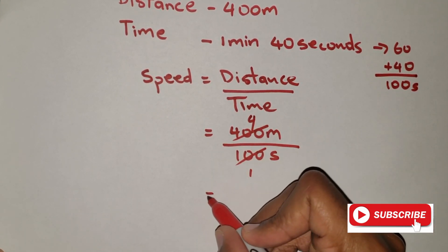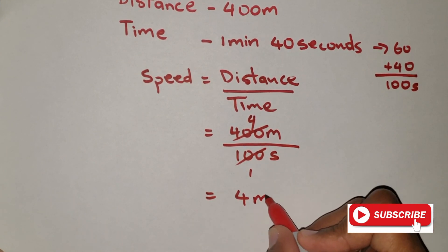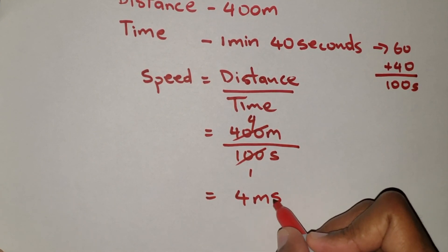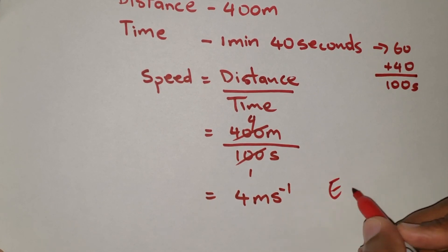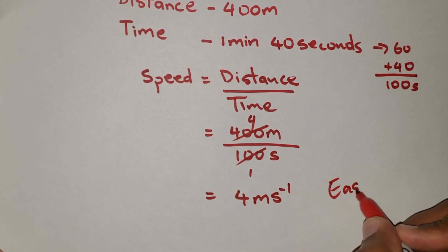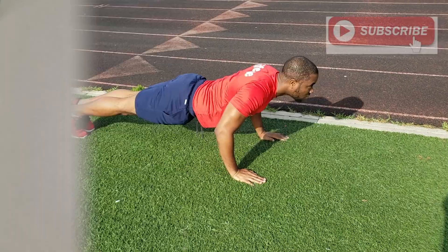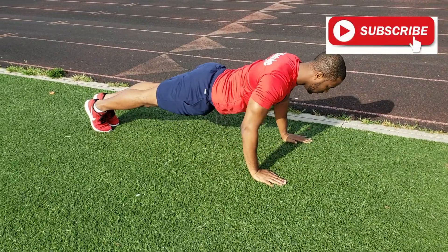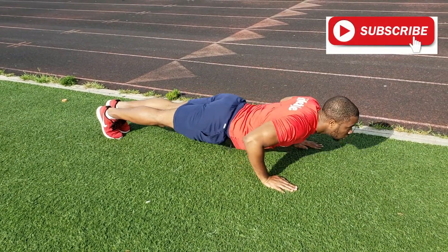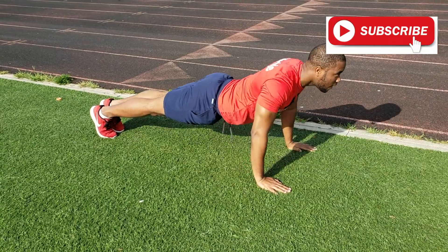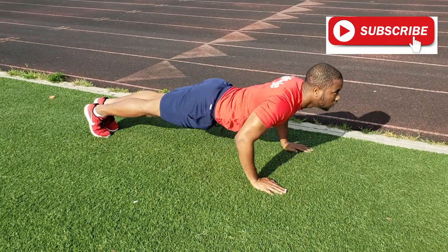100 into 400 goes four times, so we're simply left with four meters per second — very, very easy. As a bonus, I need you guys to determine the speed at which I'm doing these push-ups. You need to count them and watch the time. I want to see the answers down in the comment section.